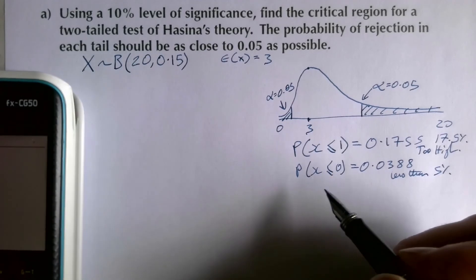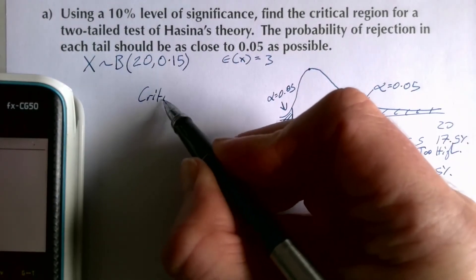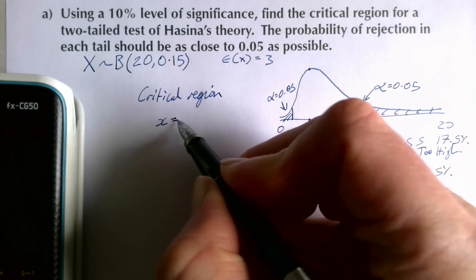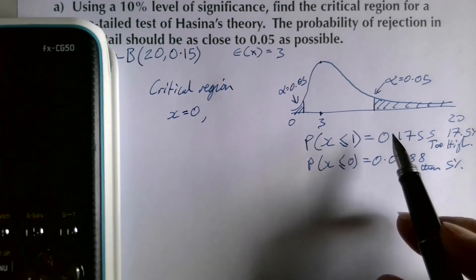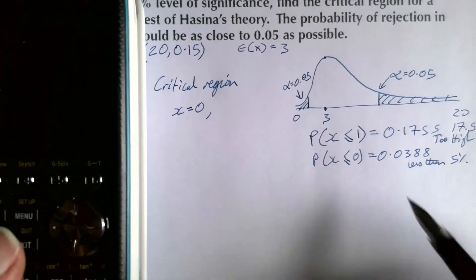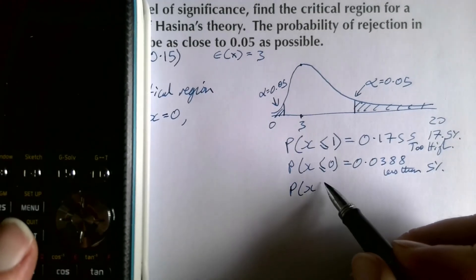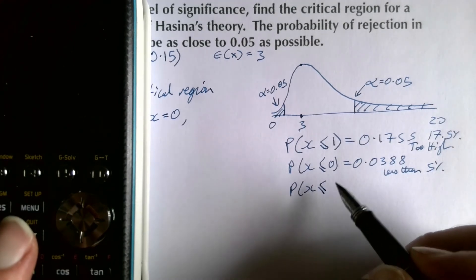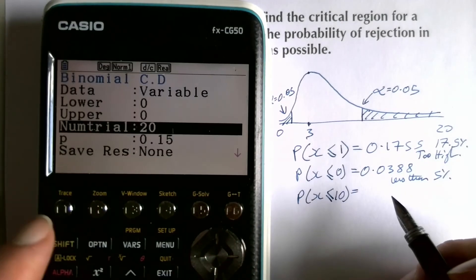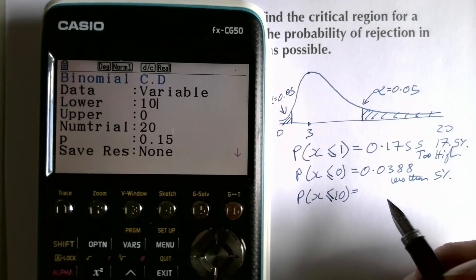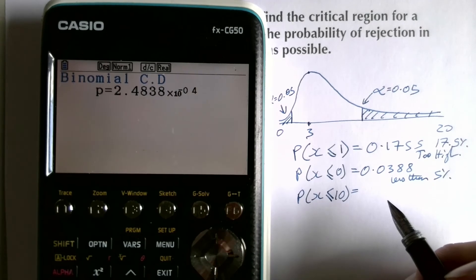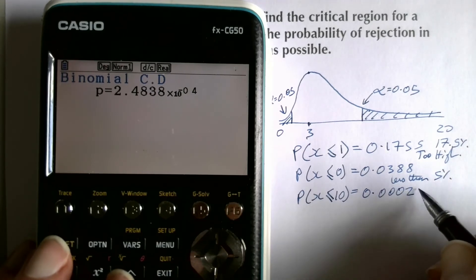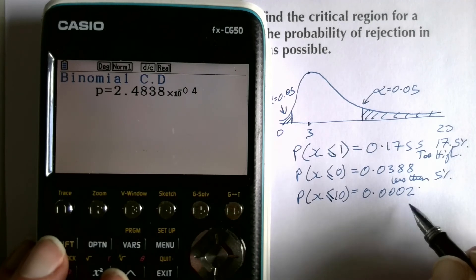So the lower critical region is x = 0. For the upper end, starting with P(X ≥ 10): lower = 10, upper = 20, p = 0.15 gives 0.0002 — way too small.